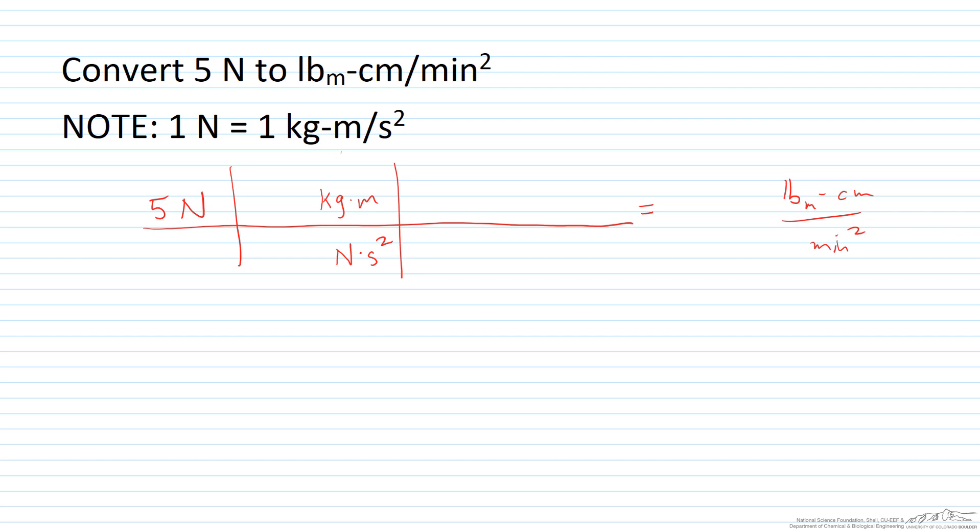So when we do that, we know that there's 1 kilogram meter per second squared per Newton. 1 Newton is 1 kilogram meter per second squared, so I'm going to write it like that. The Newtons cancel. So we've gotten rid of the Newton.